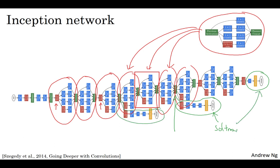And this other side branch, again, takes a hidden layer, passes it through a few layers, like a few fully connected layers, and then has a softmax try to predict what's the output label. And you should think of this as maybe just another detail of the inception network. But what it does is it helps ensure that the features computed, even in the hidden units, even at intermediate layers, that they're not too bad for predicting the output class of an image. And this appears to have a regularizing effect on the inception network, and helps prevent this network from overfitting.